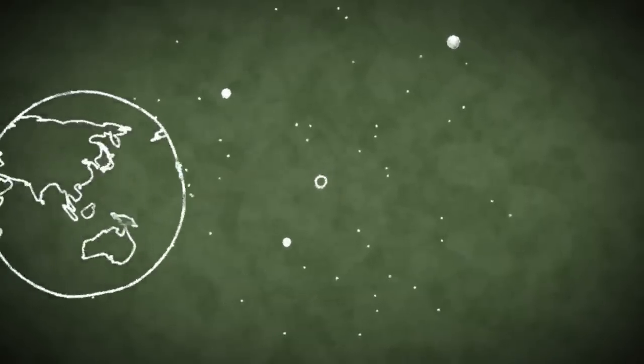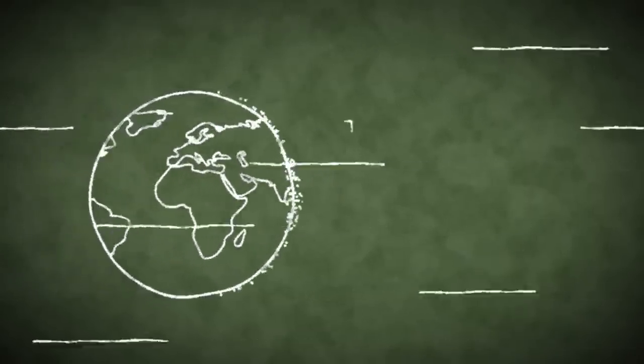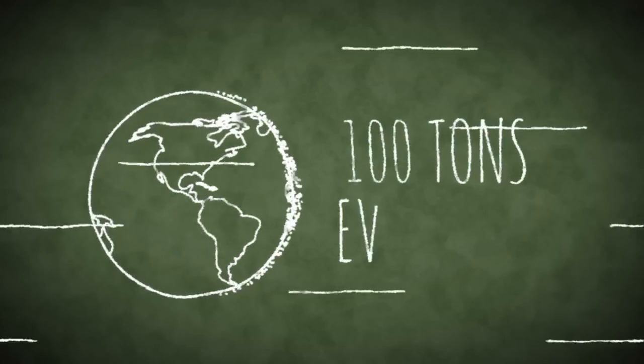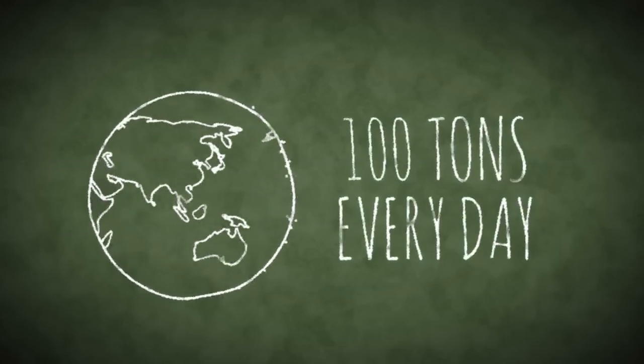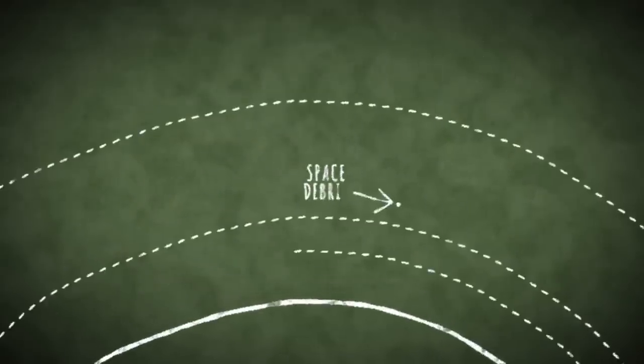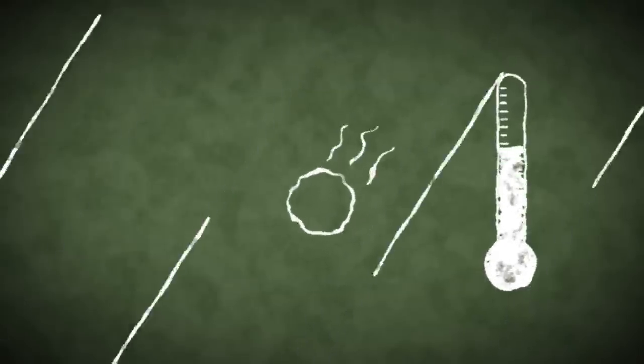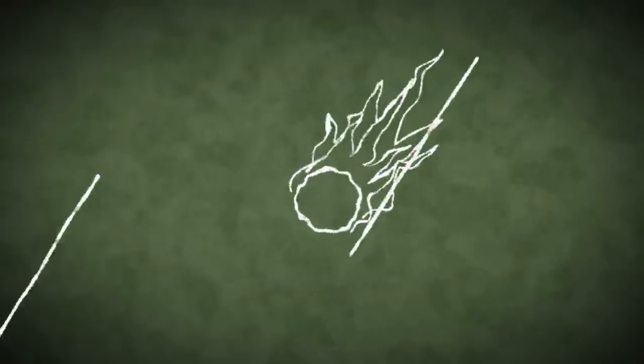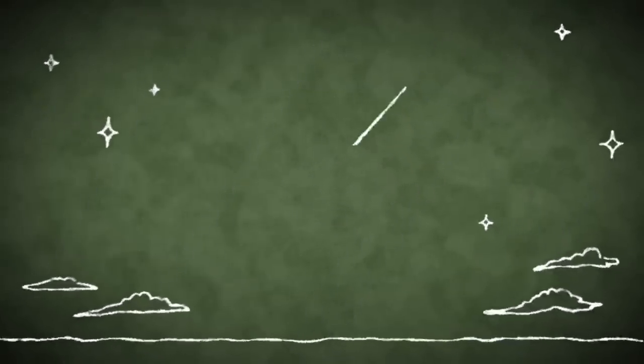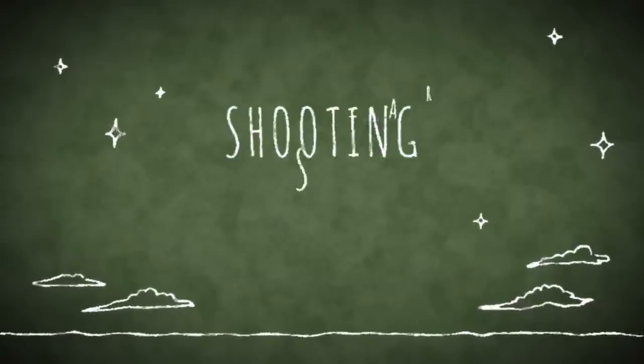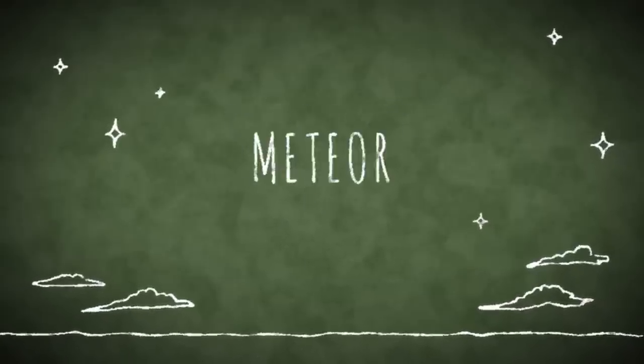Earth sweeps up this debris in its orbit about the Sun all the time, collecting about a hundred tons of this material every day. Passing through denser and denser layers of our atmosphere, these particles heat up reaching thousands of degrees Fahrenheit and incinerating high above the ground. This causes the brief streak of light known as a shooting star or more properly a meteor.